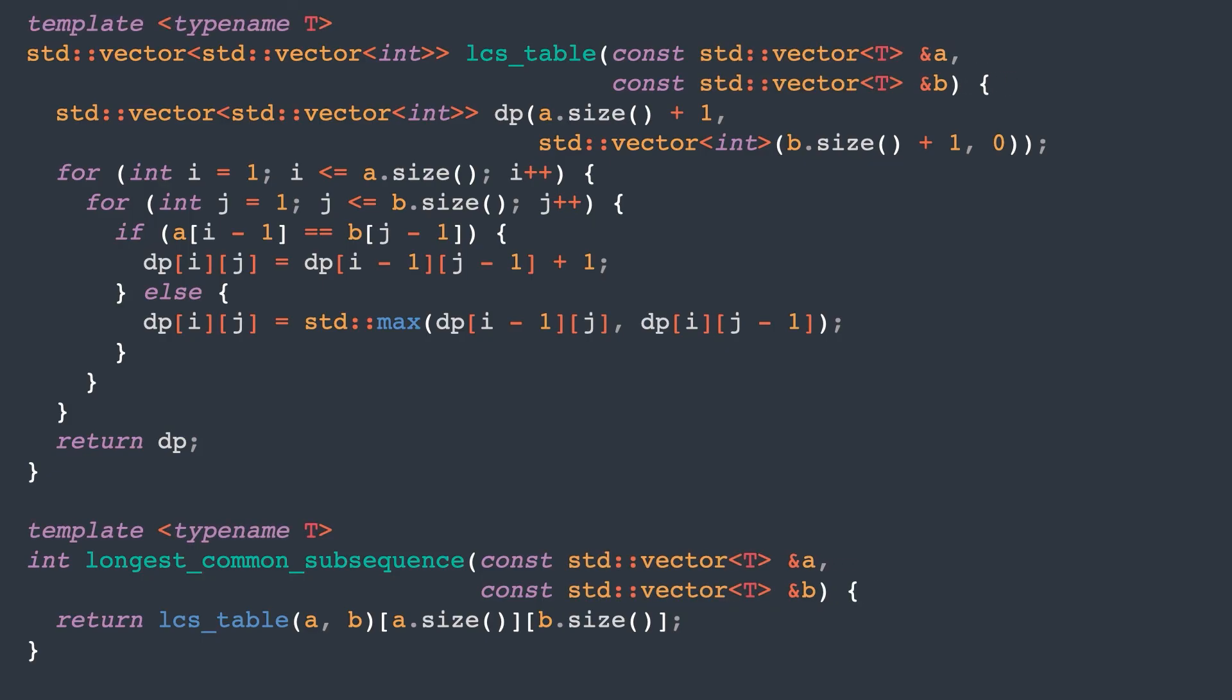In C++, we can use templates to implement this for a generic element T. Okay, now we know the longest common subsequence of lines for the two files. How can we use this to print the differences?